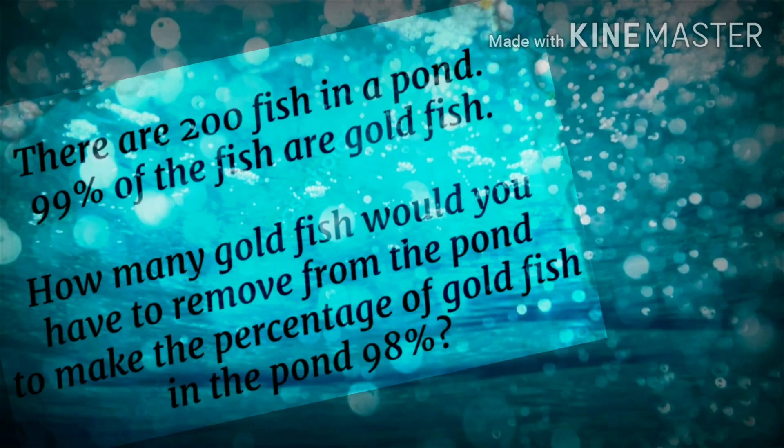There are 200 fish in a pond. 99% of the fish are goldfish. How many goldfish would you have to remove from the pond to make the percentage of goldfish in the pond 98%?